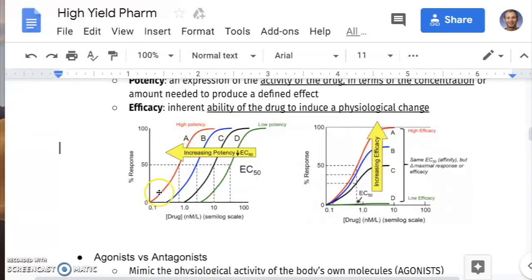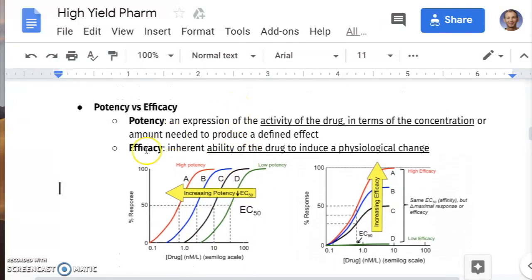Most potent is A, least potent is D. Let's move to efficacy. Efficacious means the ability to provoke a response or a physiological change.